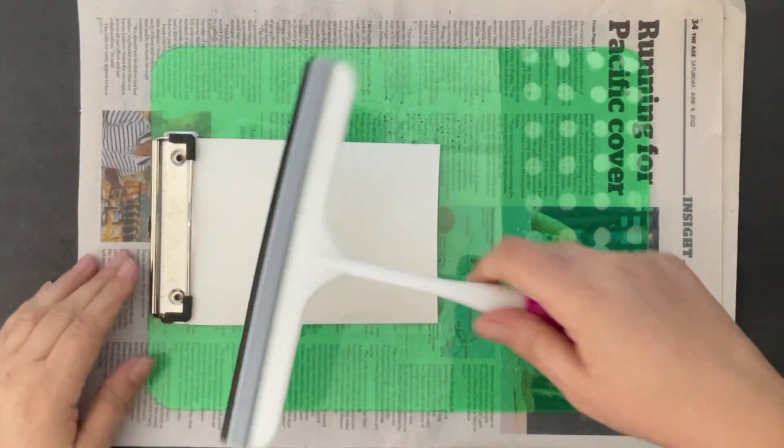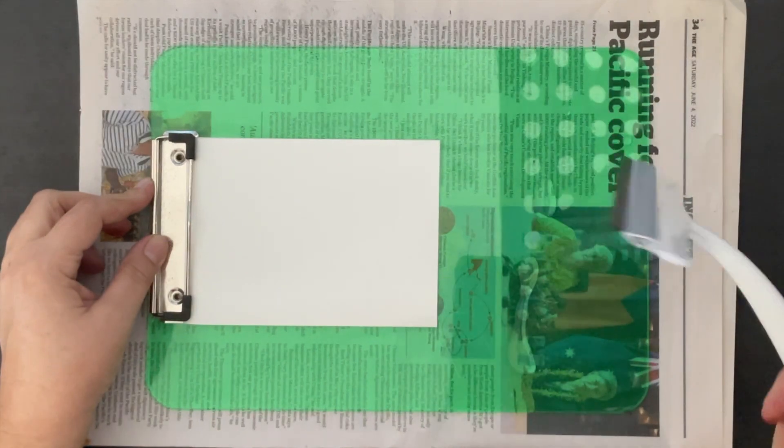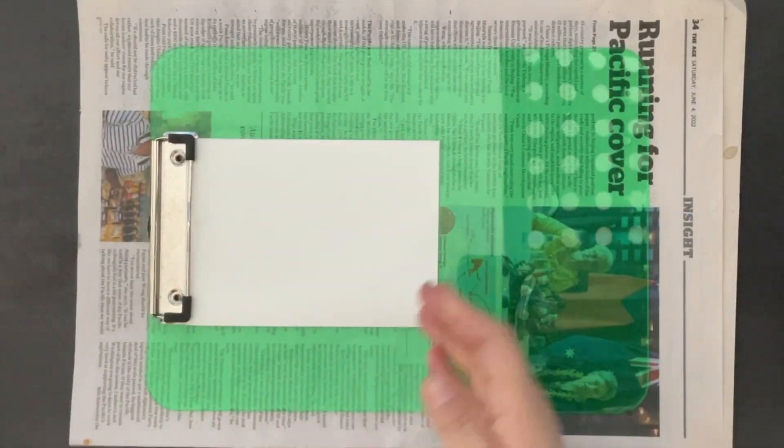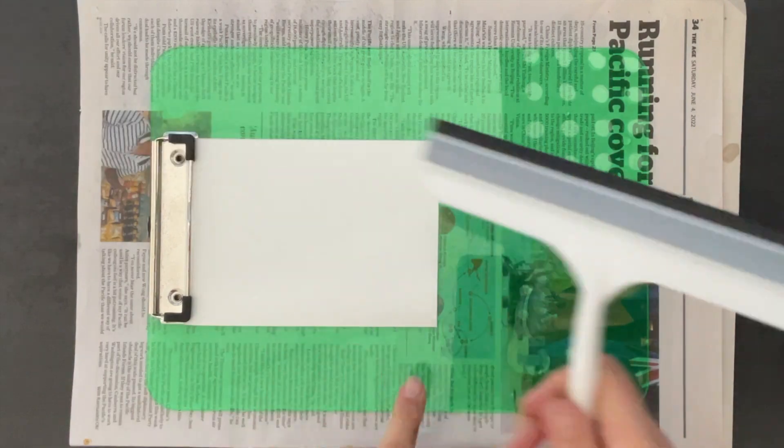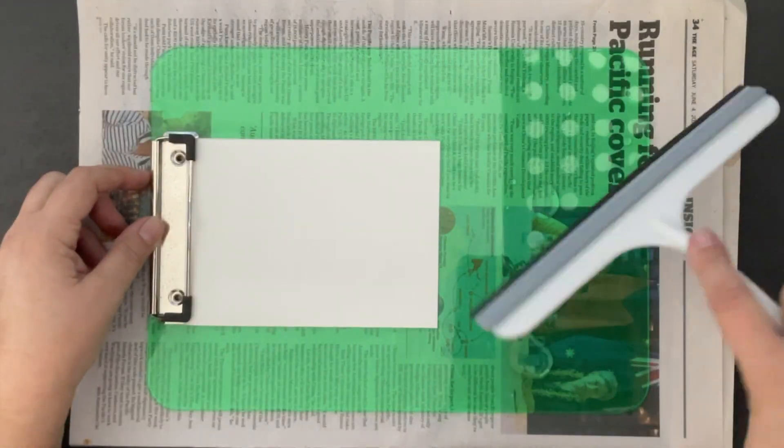And with the squeegee, I'm going to squeegee off the excess water. You can see there's some dribbles there. We do not want our paper... Oh, I've got a big puddle on this side. So squeegee off, push down firmly.